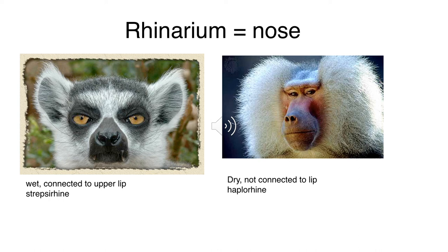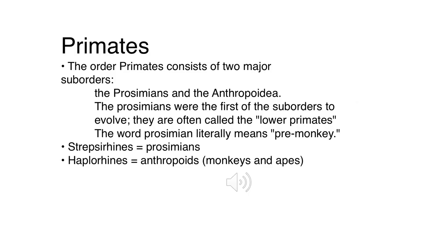Our lemur is a prosimian - the first group we'll start with. They have wet noses connected to the upper lip, like a dog or a cat. Their nose is moist and that connection in the middle of the upper lip connects toward the gum, which limits the amount of facial expression this primate can do. The baboon is a Haplorhini with a dry nose just like you and I, and his upper lip is not connected, giving him a big range of facial expression.